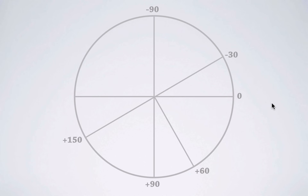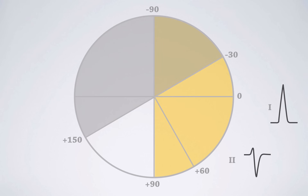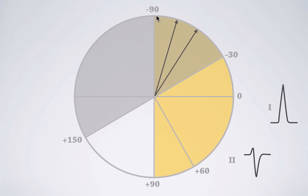When lead one is positive — meaning the cardiac axis points toward lead one — and lead two is mainly negative — meaning the main cardiac axis points away from lead two — the cardiac axis must lie at their intersection, the dark yellow area from minus 30 to minus 90 degrees. This is called left axis deviation.